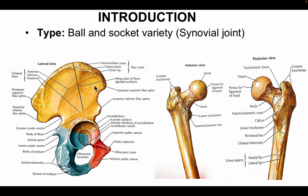Let's see the type — it is a multi-axial joint which is of the ball and socket variety of the synovial joint. Before dealing with the entire hip joint, let's know some of the features present in the hip bone and in the proximal aspect of the femur, both the anterior and posterior views.